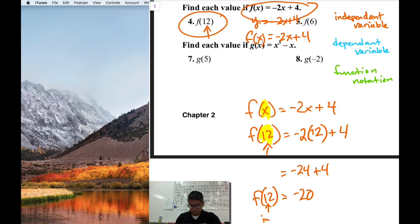So f of 12, or the function in terms of 12, equals negative 20. So this is my input and this is my output, or this is my independent variable and this is my dependent variable. The dependent variable always depends on whatever my input is or my independent variable, my x term.